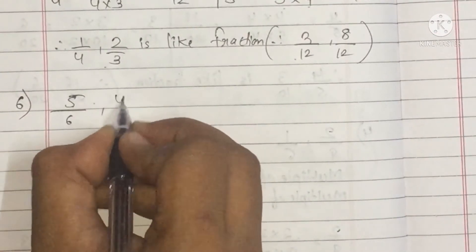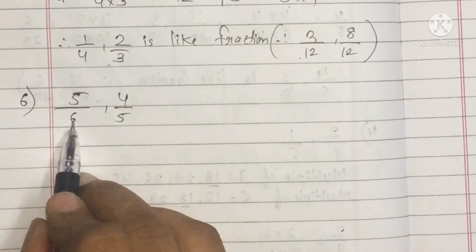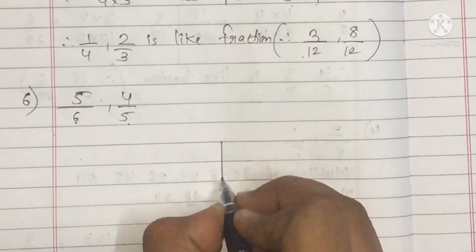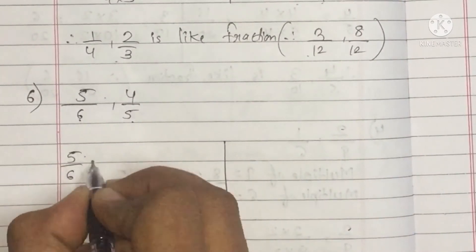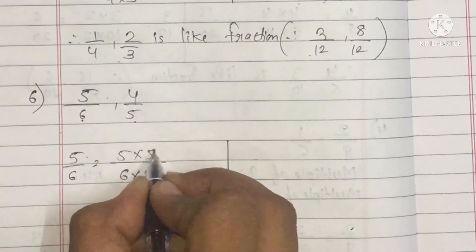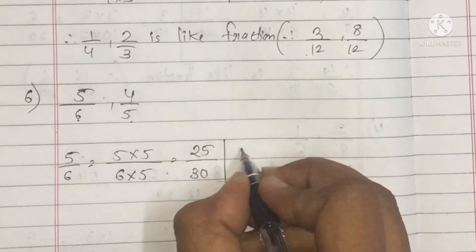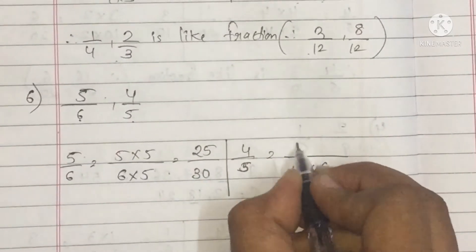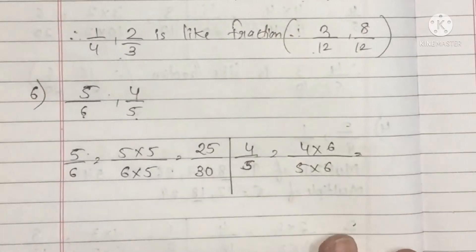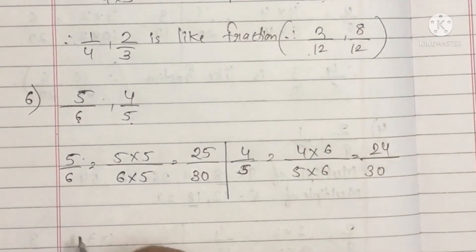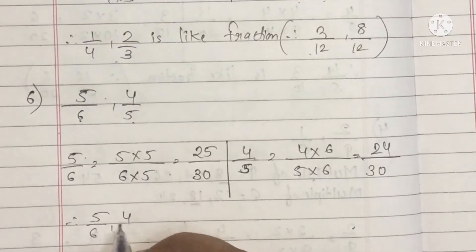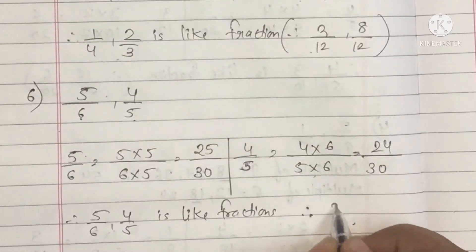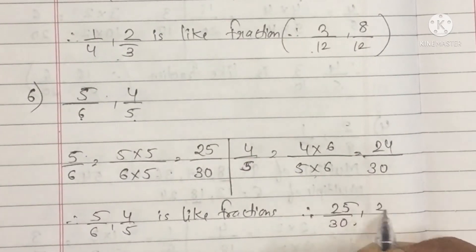Number 6: 5 upon 6 and 4 upon 5. Since neither 5 is a multiple of 6 nor 6 of 5, we multiply: 5 upon 6 multiplied by 5 gives 5 fives are 25 and 6 fives are 30. For 4 upon 5, multiply by 6: 4 sixes are 24 and 5 sixes are 30. So we get 25 upon 30 and 24 upon 30 — like fractions with common denominator 30.